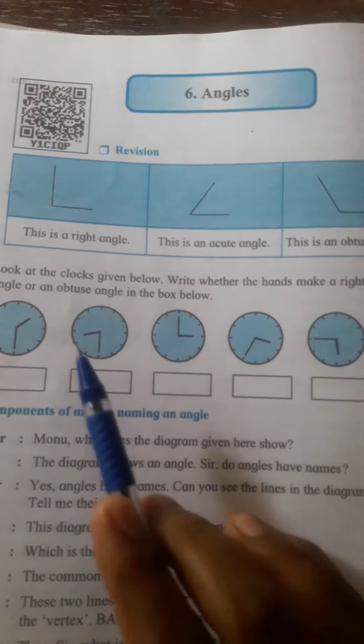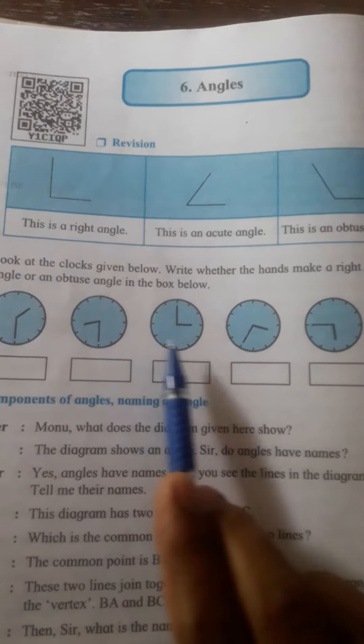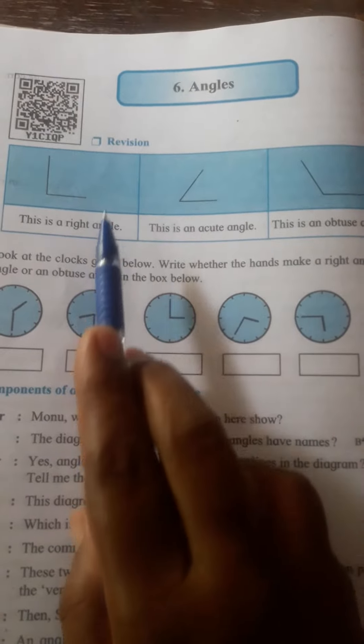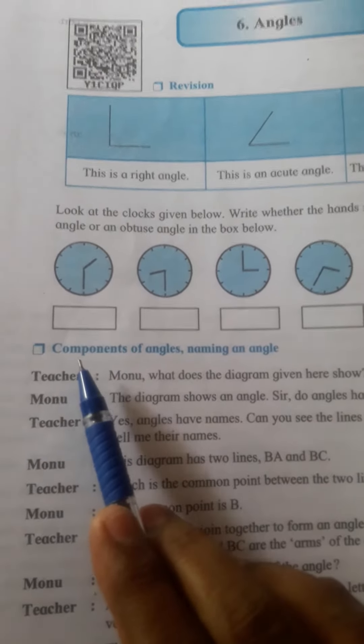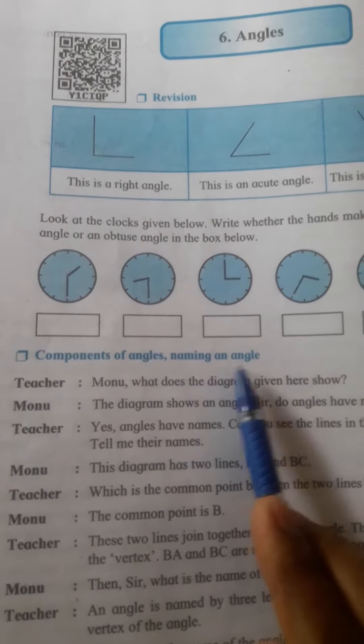So students, this is revision. Here are given some clocks and their angles, and you have to find out which type of angles they are. Now we learn the next point, that is components of angles and naming an angle.